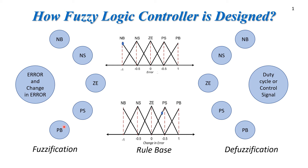So let's consider one scenario where the error is lying in the negative big category. This is negative small, this is zero, this is positive small, and this is positive big.